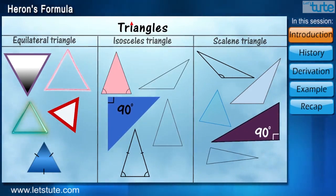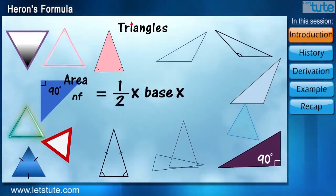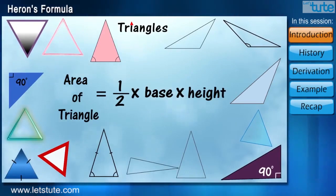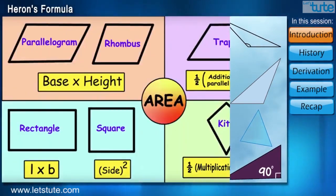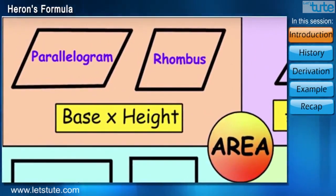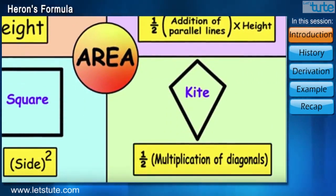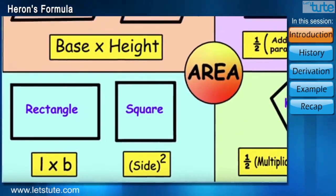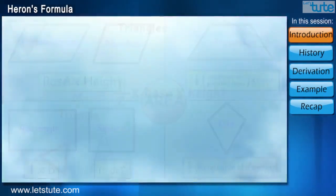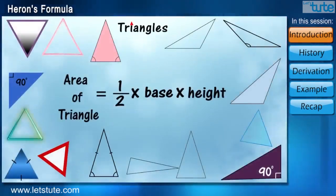For all these types of triangles, we have only one formula to calculate its area. Whereas, we have learnt that all different types of quadrilateral have different formulas for their areas. Isn't this a little unfair for triangles?